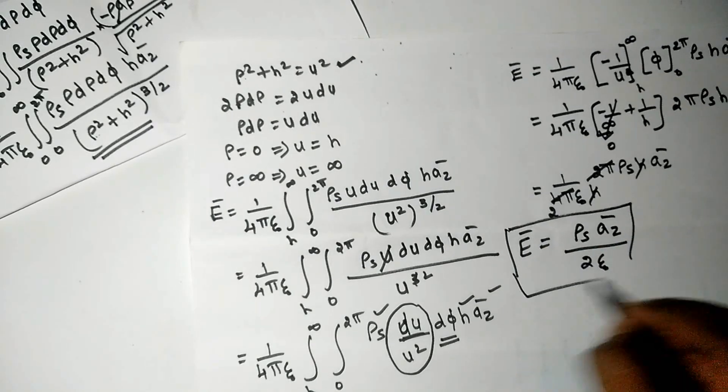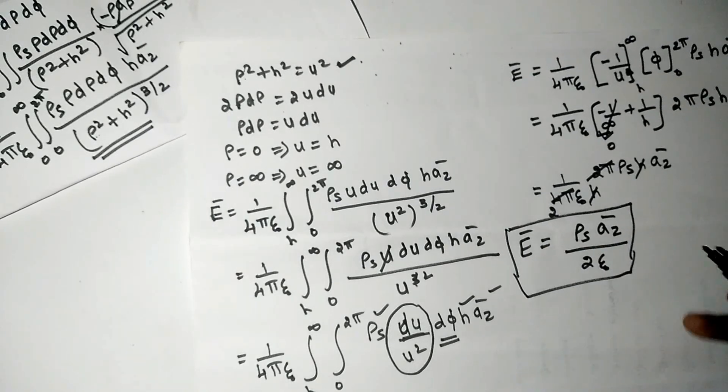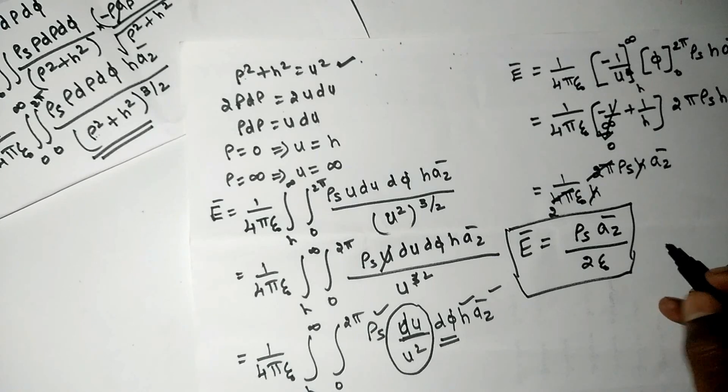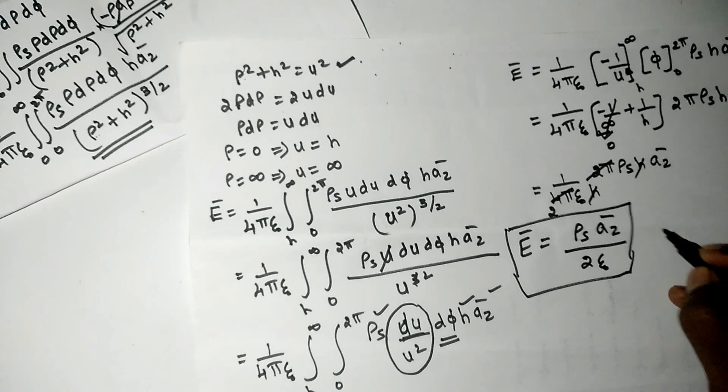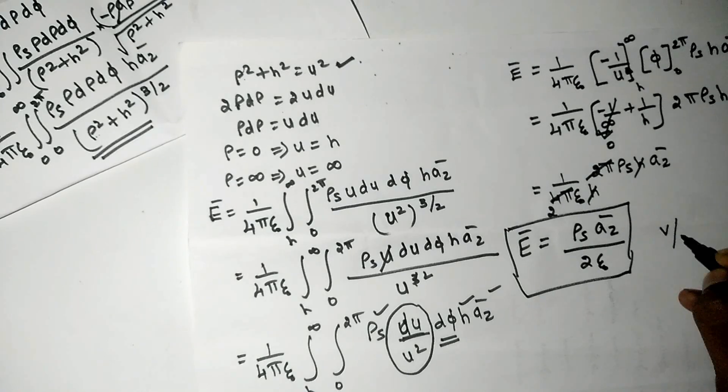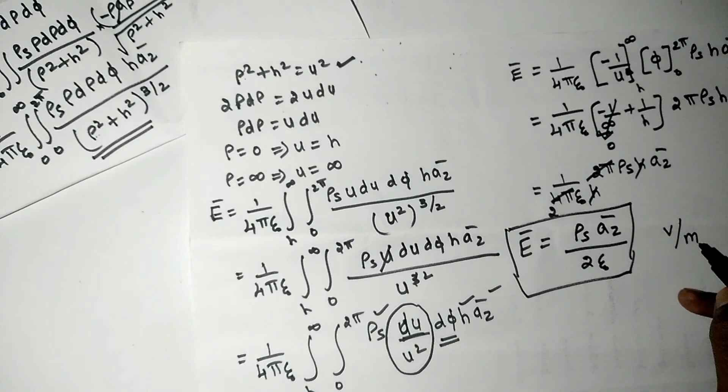This is the equation for electric field intensity for an infinite sheet of charge, and its unit is volts per meter.